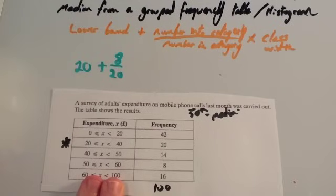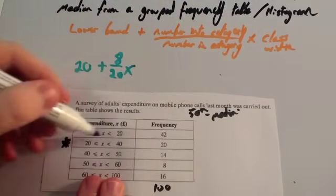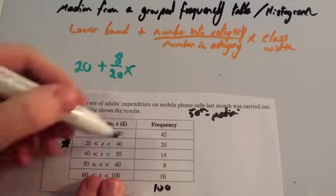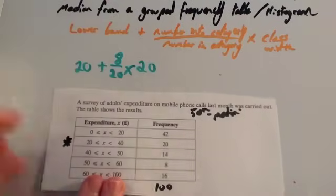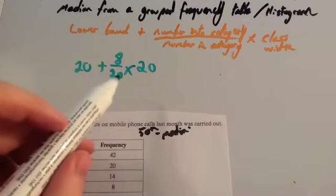So it's 8 twentieths of the way into that group. Times by the class width. So the class is from 20 to 40. So it's 20 wide. We're going to times that by 20. So we're going to do 20 plus 8 twentieths times 20.